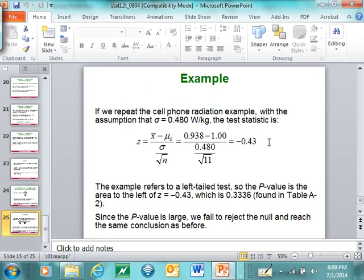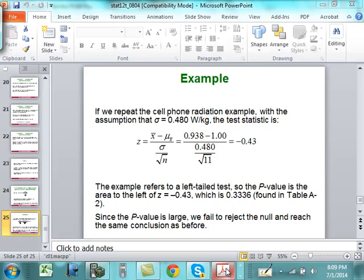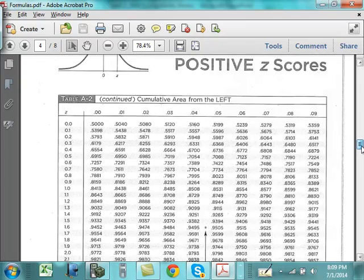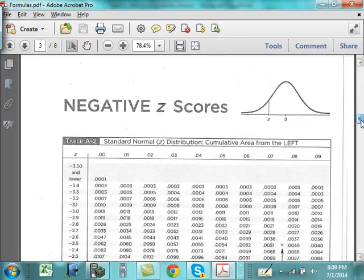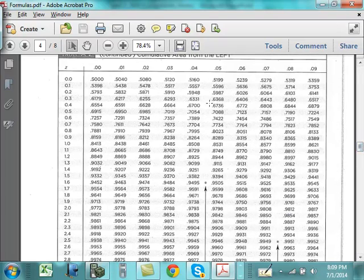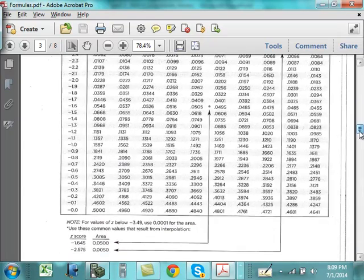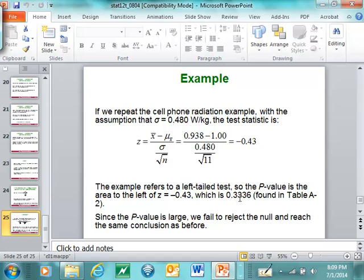As a matter of fact, we can look that up in our z-table. Let me pull up the z-table. So we will be on the first page of the z-table. Negative 0.43, here is negative 0.43. And notice that that probability is 0.3336. So 0.3336, that is much larger than 0.05. So we failed to reject the null hypothesis and reached the same conclusion that we already did before.